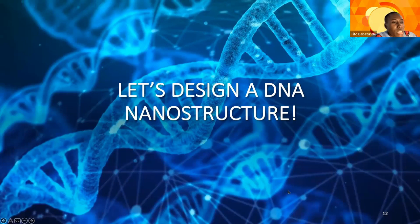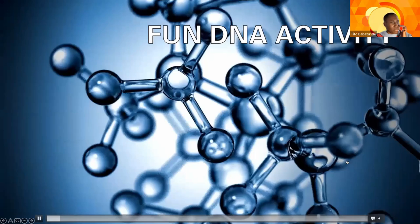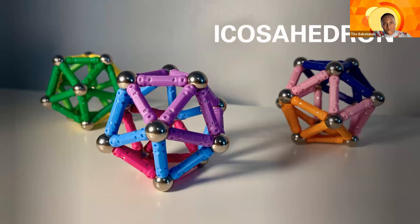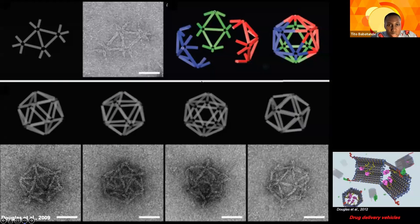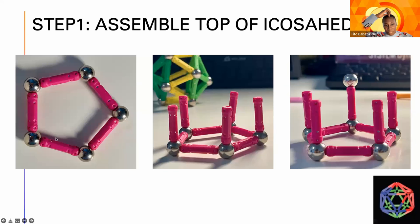Now let's design a simple DNA nanostructure as a demonstration. We're going to be designing an icosahedron, which is a 3D shape with 20 faces consisting of all equilateral triangles. You can use a wireframe icosahedron made out of DNA for drug delivery, and below we can see how it looks. You can visualize these structures with AFM, which is atomic force microscopy. Let's start making these structures.